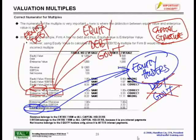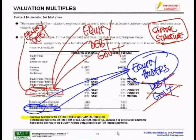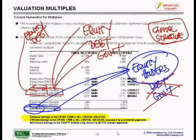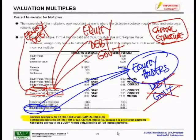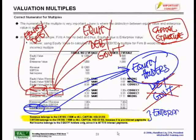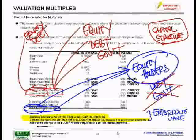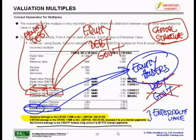Said another way: revenue belongs to the entire firm, or all capital holders, as shown at the bottom of the slide. As does EBITDA, because it is before interest payments — earnings before interest and taxes. Therefore, the correct term to use for these would be enterprise value. Net income only belongs to equity holders since it is after interest payments. And that is why you must properly align the multiples.